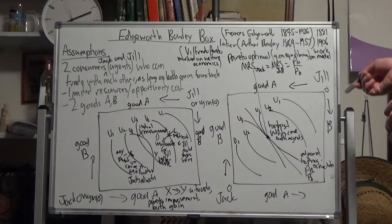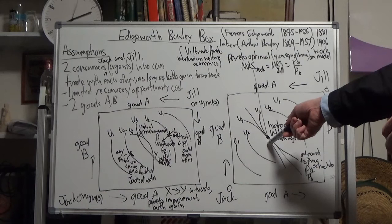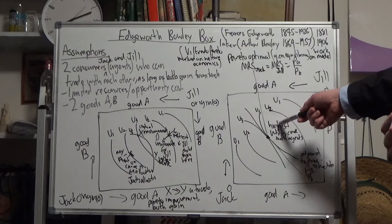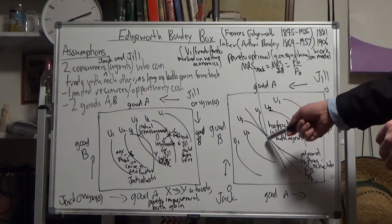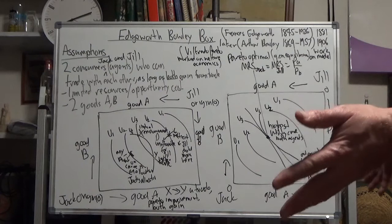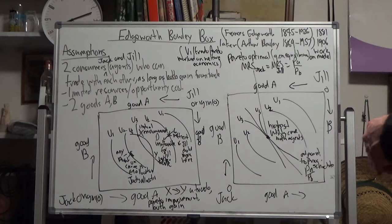They can't move any more than that tangency. If Jack was to go here, Jill would be worse off. If Jill was to go here, Jack would be worse off. So that's the final resting place of the trade and where they can go with their combinations of goods, Pareto optimality.